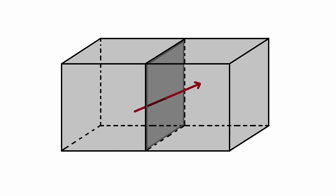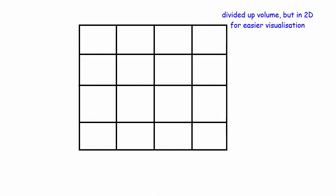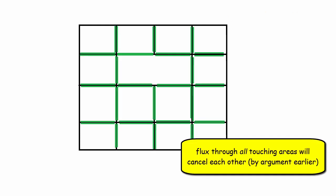And so when you add them all up, these two flux through these two surfaces will cancel each other out. And when we sum all of the fluxes through all of the volumes in our larger volume together, these two areas, their flux value will just cancel each other out and be zero.